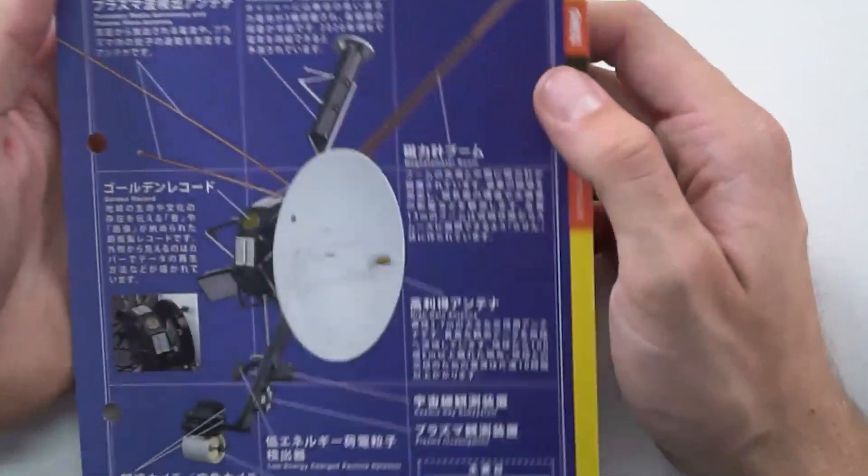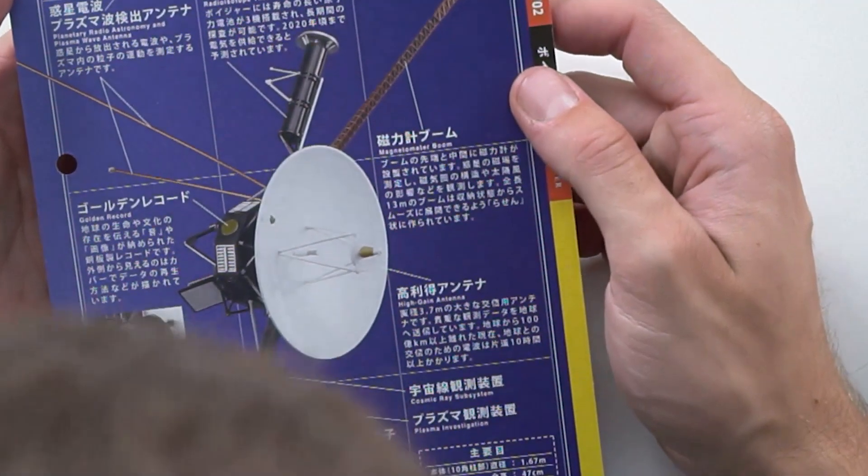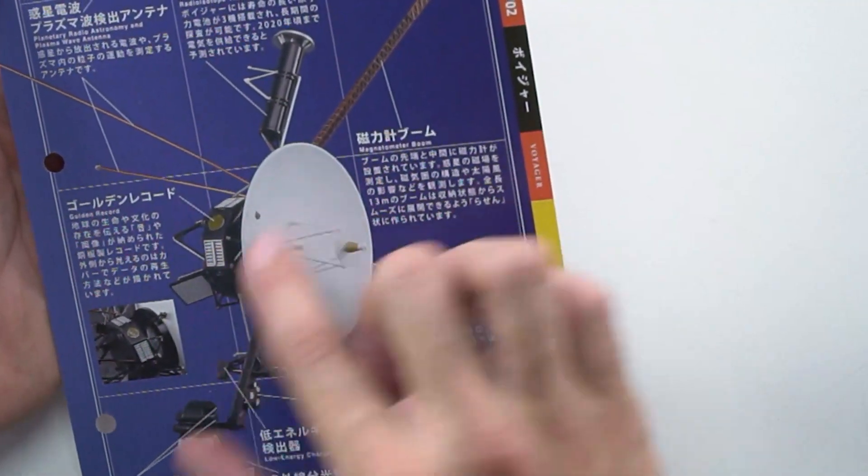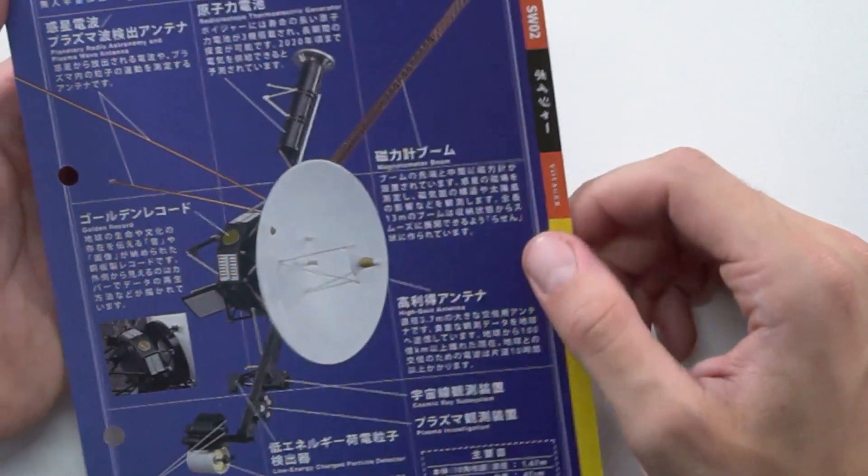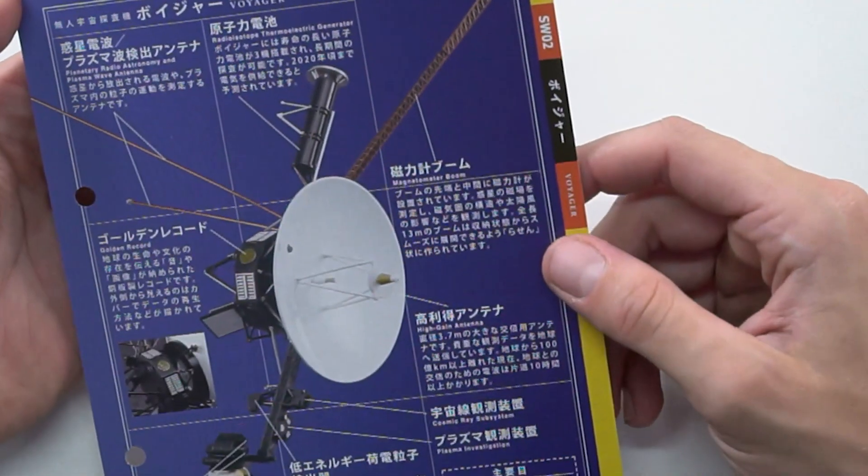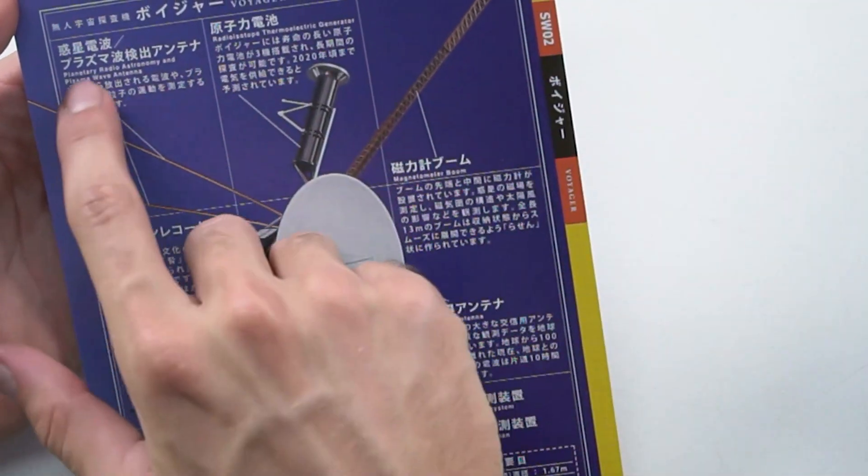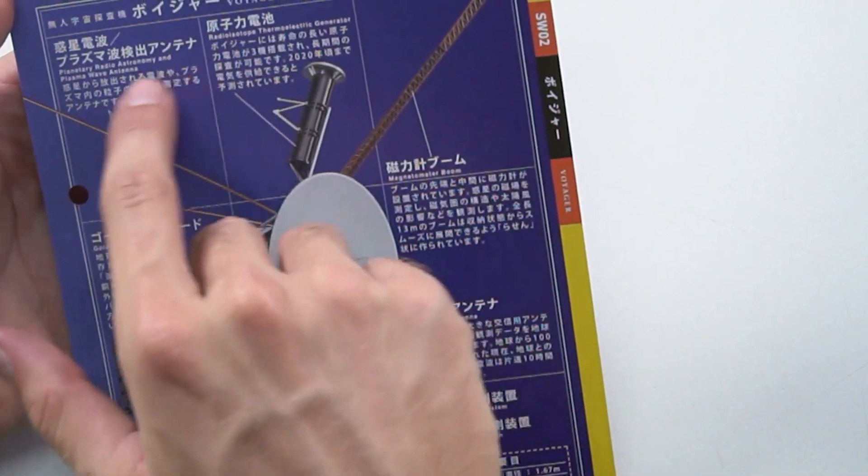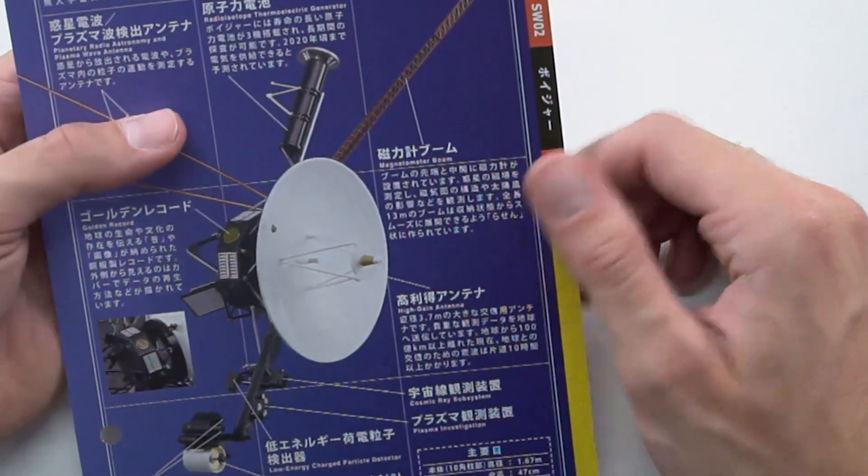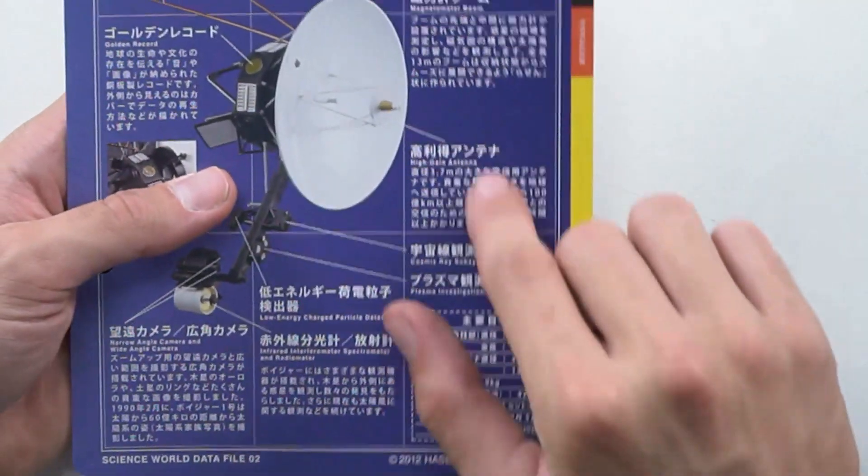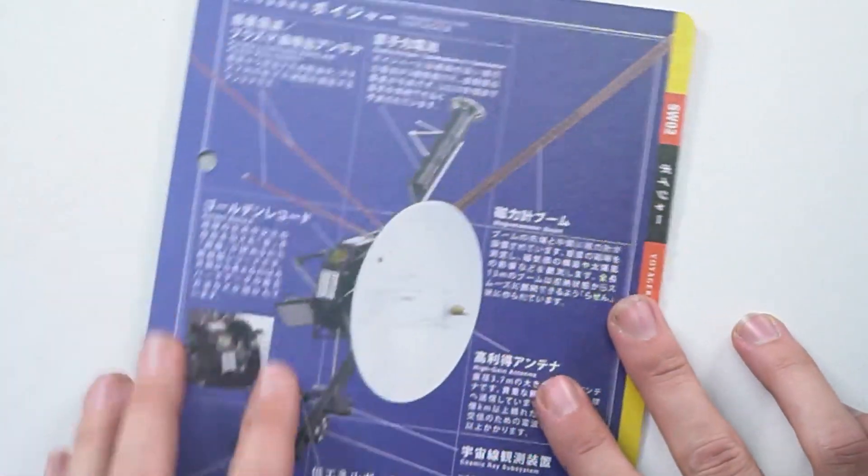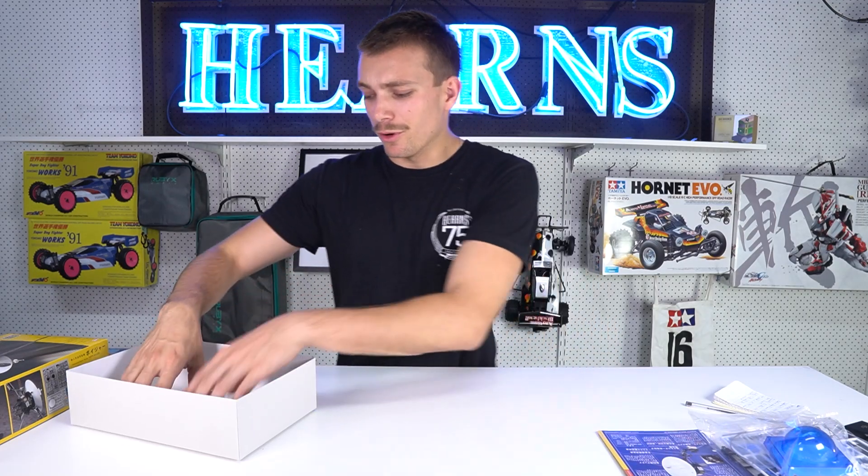This is it here. It's really nice. This is the actual model built up. They haven't got like a photo or a digital rendering. This is a photo of the actual model which is really nice. So you have like radio antenna, astronomy and plasma wave antenna. It basically goes through telling you each component of this very cool probe that you're about to build.